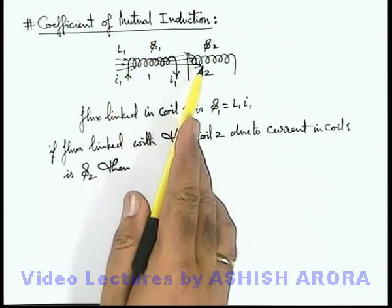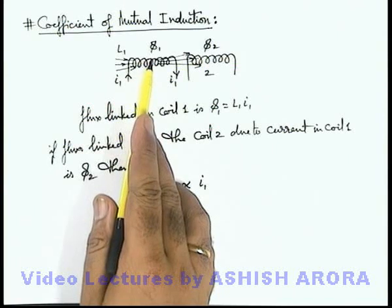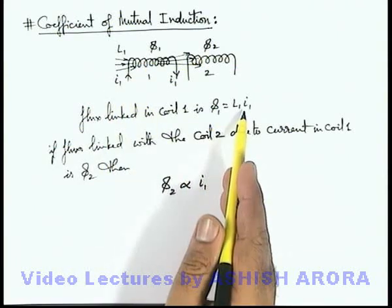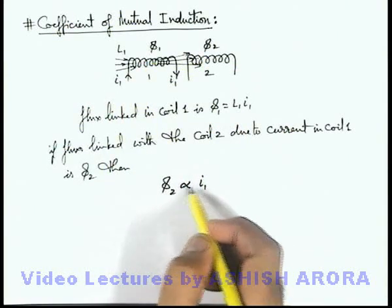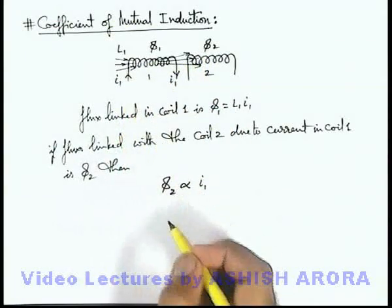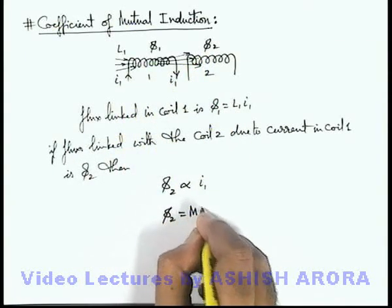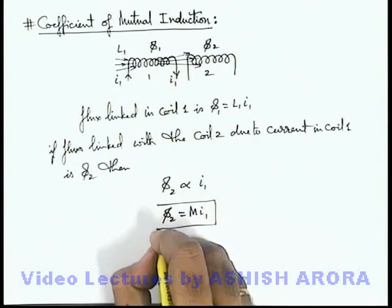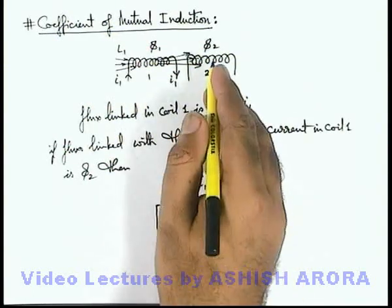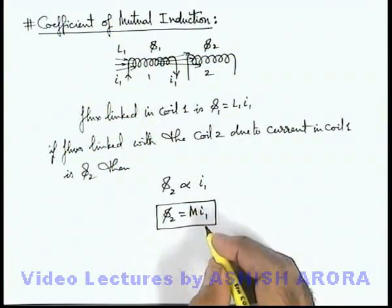Because here phi2 is proportional to phi1, and phi1 is obviously proportional to i1, so we can always write phi2 will directly depend on the value of i1. Here we can write phi2 as M i1, where M is a proportionality constant between the flux linked with the second coil and the current flowing through the first coil.